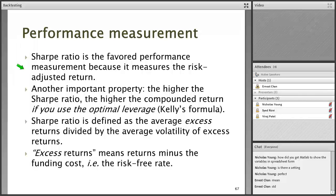To be precise, Sharpe Ratio is defined as the average excess return divided by the volatility of excess return — not just the average return. Excess return means the return minus the funding cost, which is usually the risk-free rate. But in the case of the ES future, if you are trading futures, there is actually no funding cost, so we don't need to subtract the risk-free rate. This point will be taken up in Thursday's session.